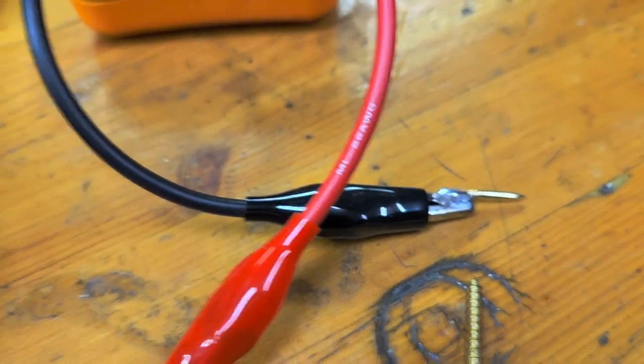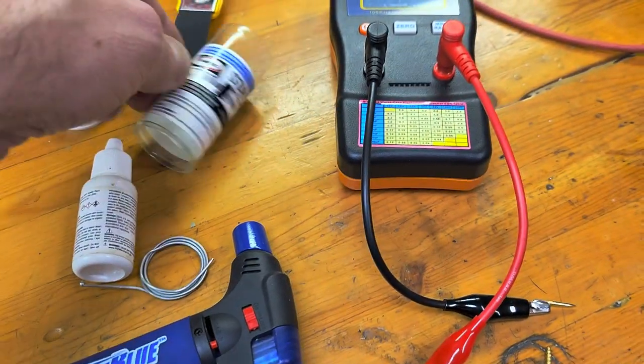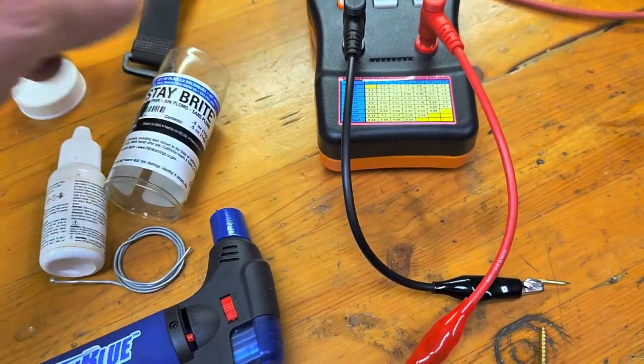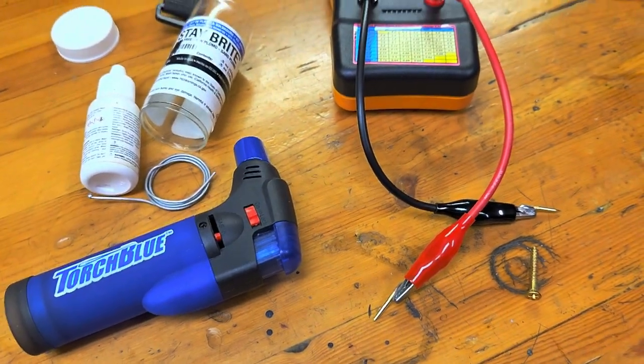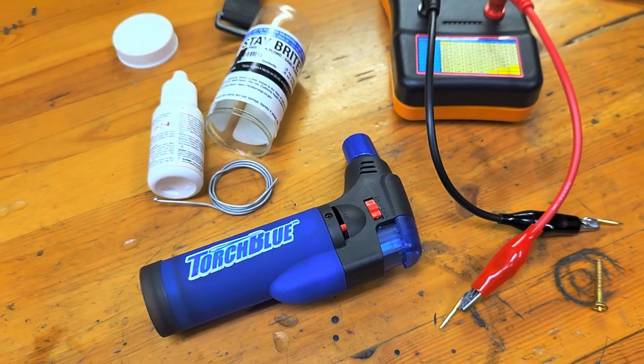And then I use silver solder, this Stay Bright silver solder. You might be able to get away with normal solder, it just won't be as strong. And there's a mini torch.